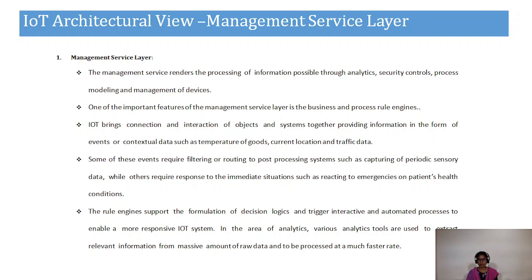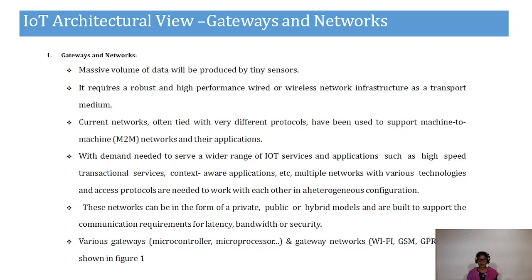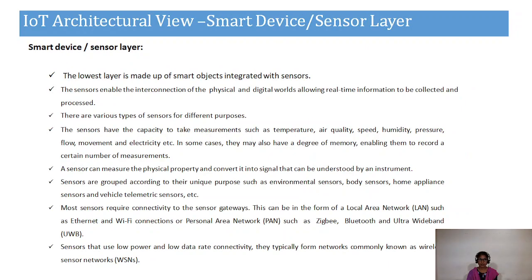The last layer is the application layer, which covers smart applications across various domains like transportation, lifestyle, cities, buildings, factories, agriculture, supply chain, emergency, healthcare, retail, culture and tourism, and environment and energy. This IoT architectural view consists of four layers: application layer, management service layer, network layer, and sensor layer.